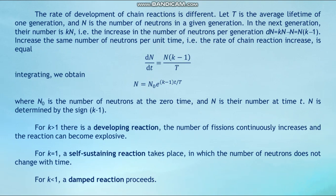The rate of development of chain reactions is different. Let T be the average lifetime of one generation, and N be the number of neutrons in a given generation. In the next generation, their number is k·N. The increase in the number of neutrons per generation is ΔN = kN − N = N(k − 1). Integrating: N = N₀ · exp[(k − 1)·t/T], where N₀ is the number of neutrons at time zero and N is their number at time t.